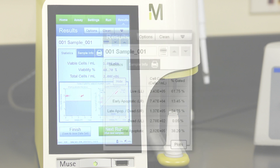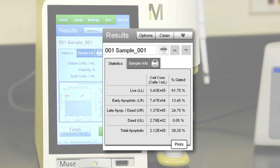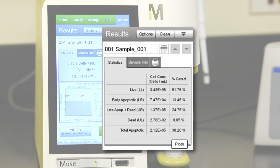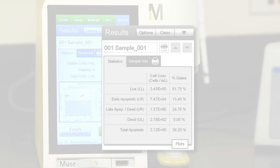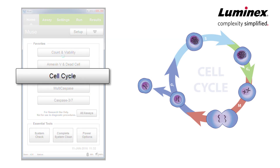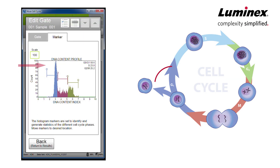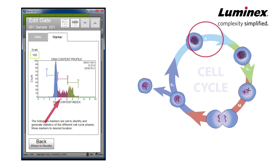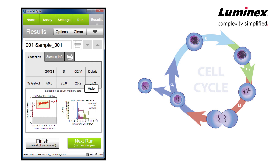Results are presented in a simple table format that includes absolute counts and percentages for each cell population. The Muse cell cycle assay provides a rapid, convenient, and quantitative assay for the various phases of cell cycle. Unlike traditional cell cycle analysis, which typically requires complex protocols, instrumentation, and software interpretation, the Muse system enables you to easily determine cell cycle distribution whenever you need it, with just a pipette, in a few simple steps.